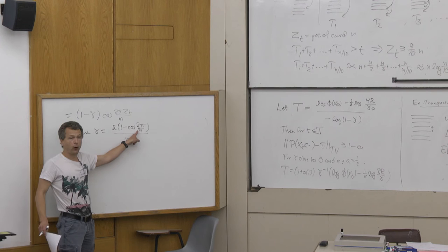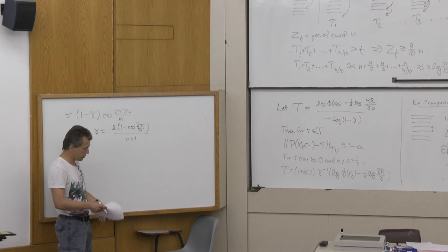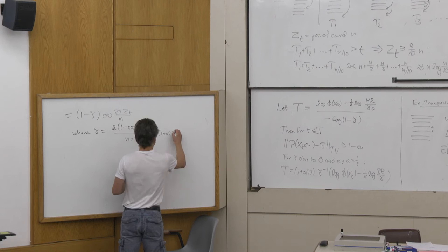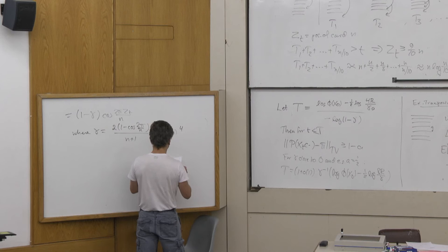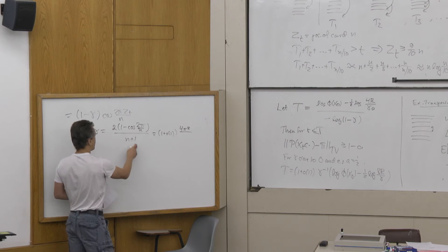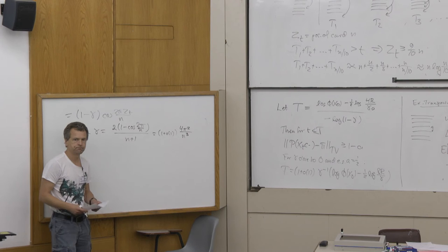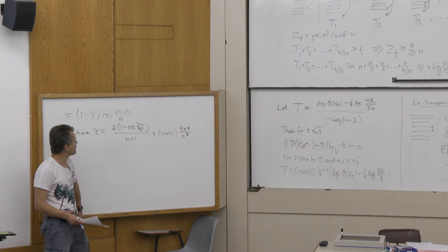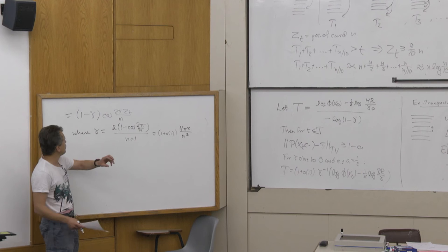With gamma equal to 2 times (1 minus cos(2π/N)) divided by (N+1). Now if N is large, cos(2π/N) is a cosine of a very small argument, so by Taylor expansion it's 1 minus (2π/N)² / 2 plus small order terms. Working this out with N² in the denominator and another N, we get gamma is approximately 4π² over N³.